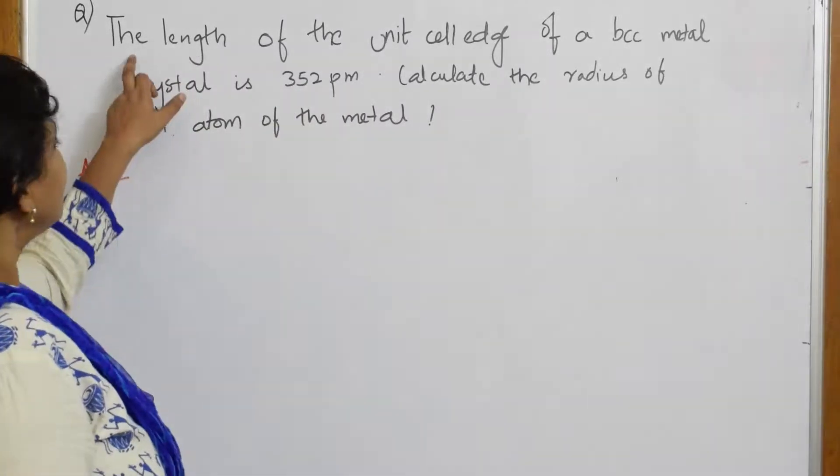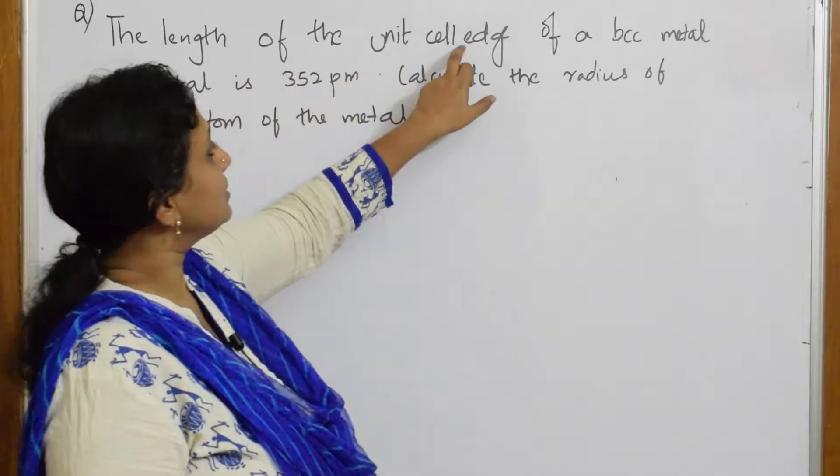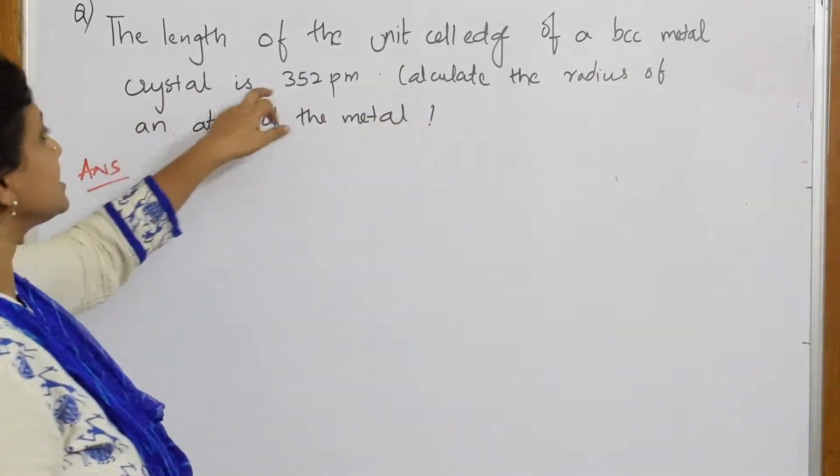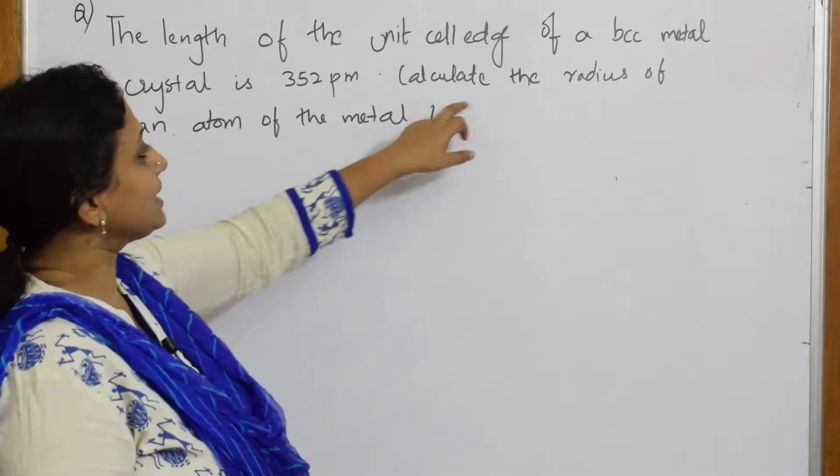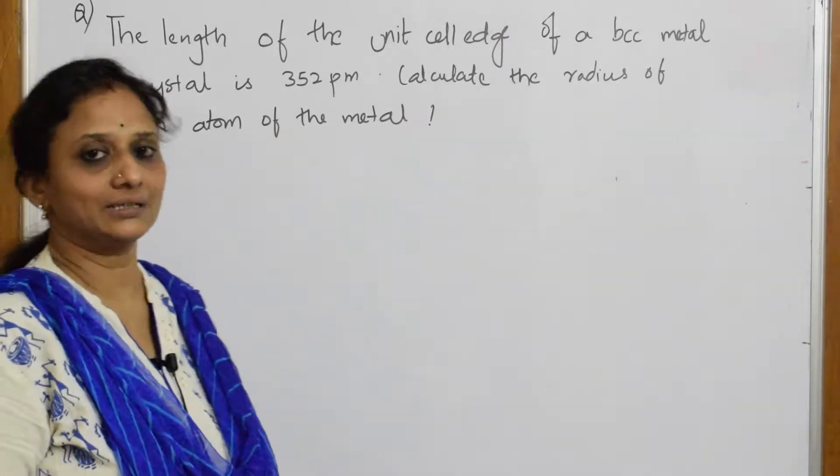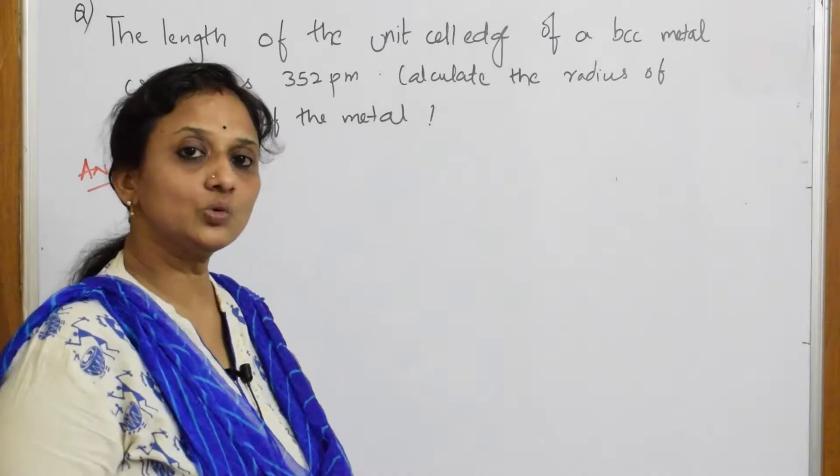Let us read the problem: The length of the unit cell edge of a BCC metal crystal is 352 picometer. Calculate the radius of an atom of the metal. This is the question, but there's one clue given to me - that is BCC metal.